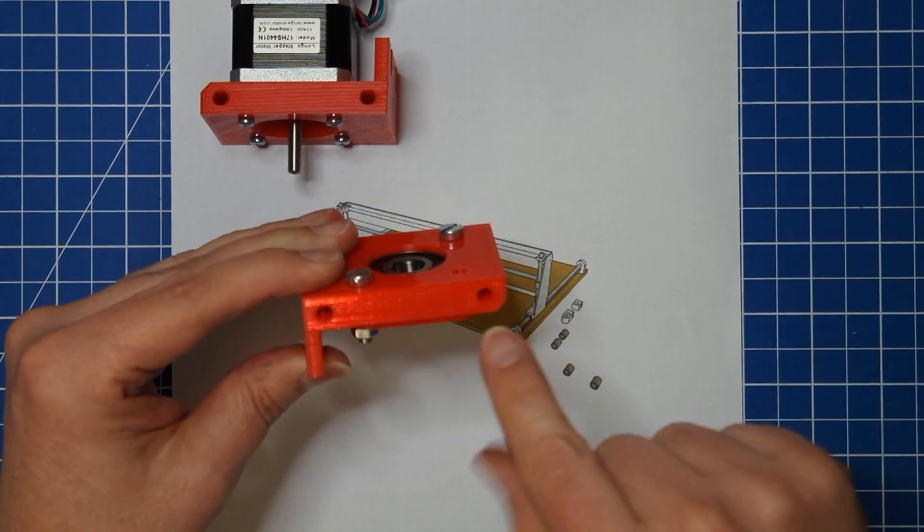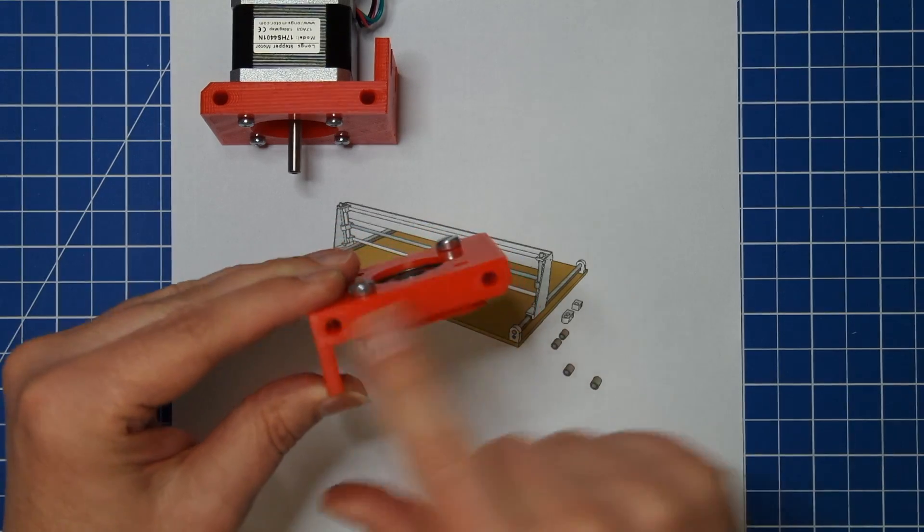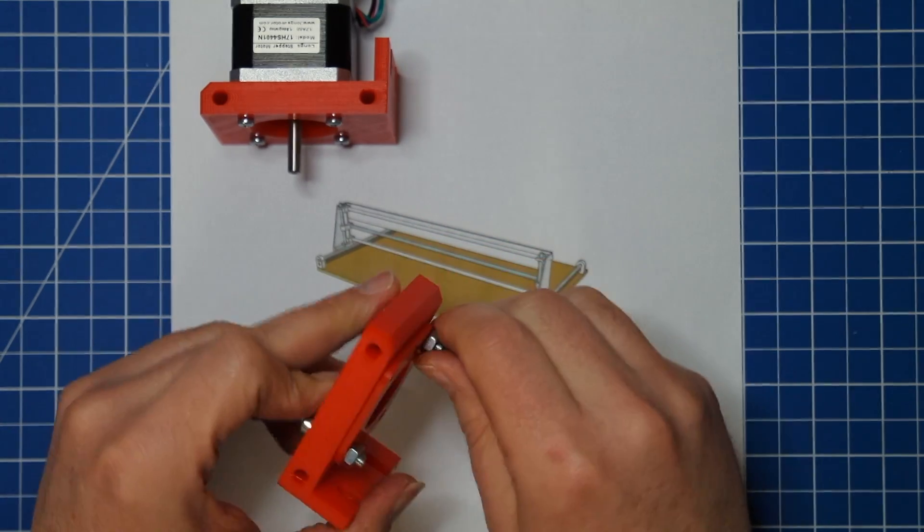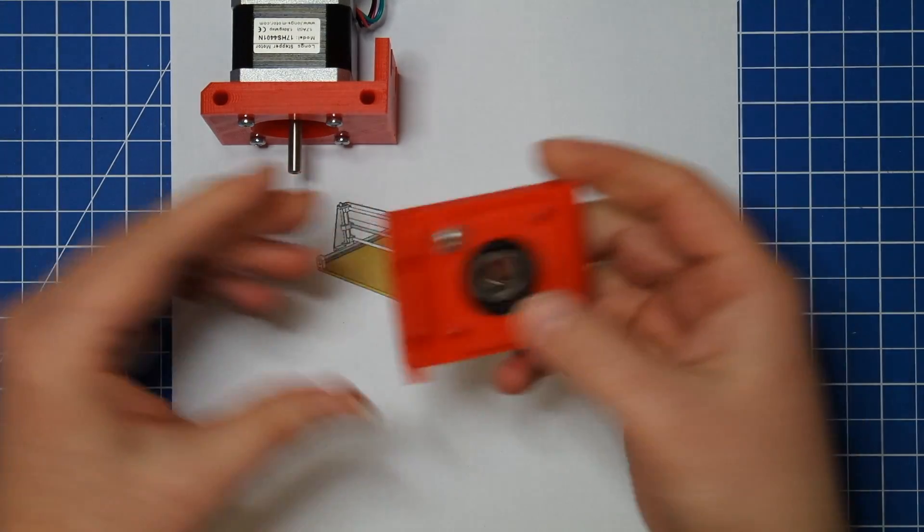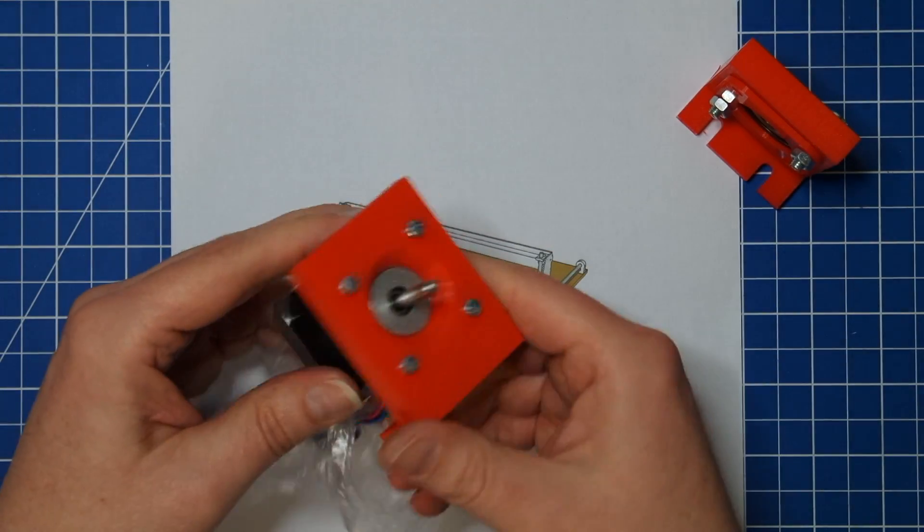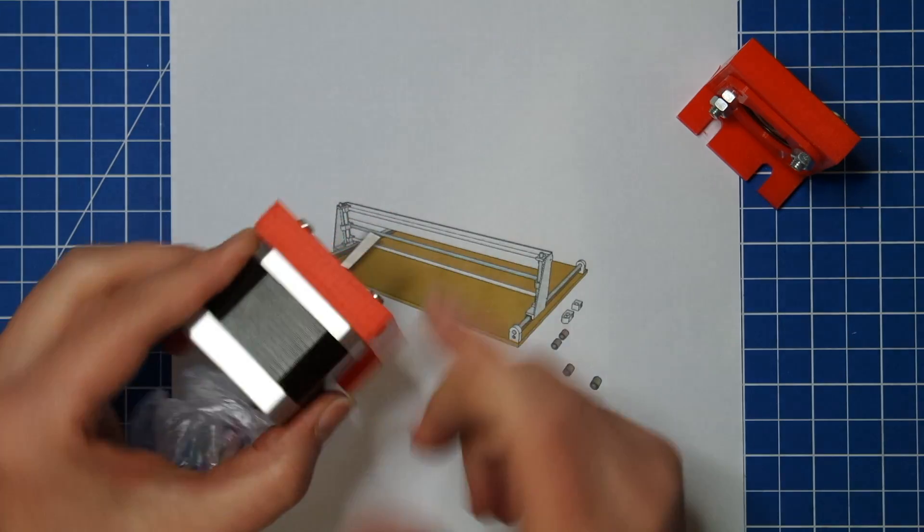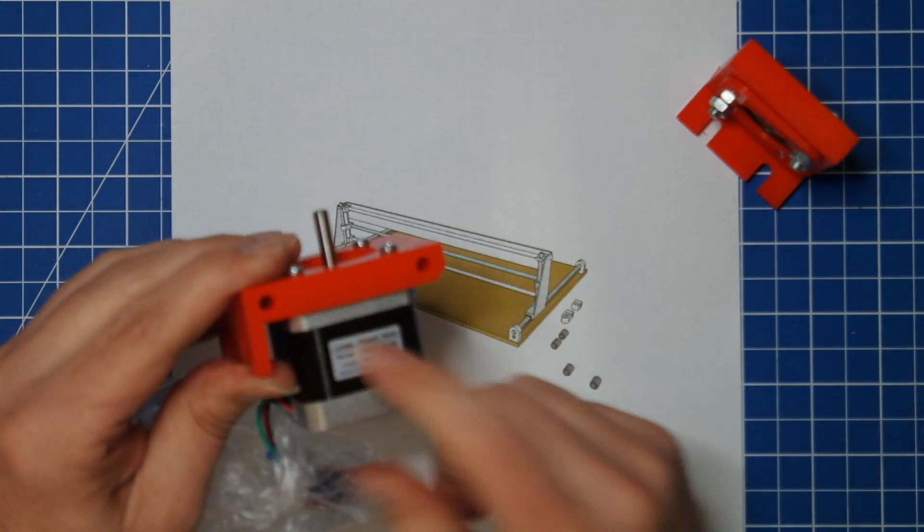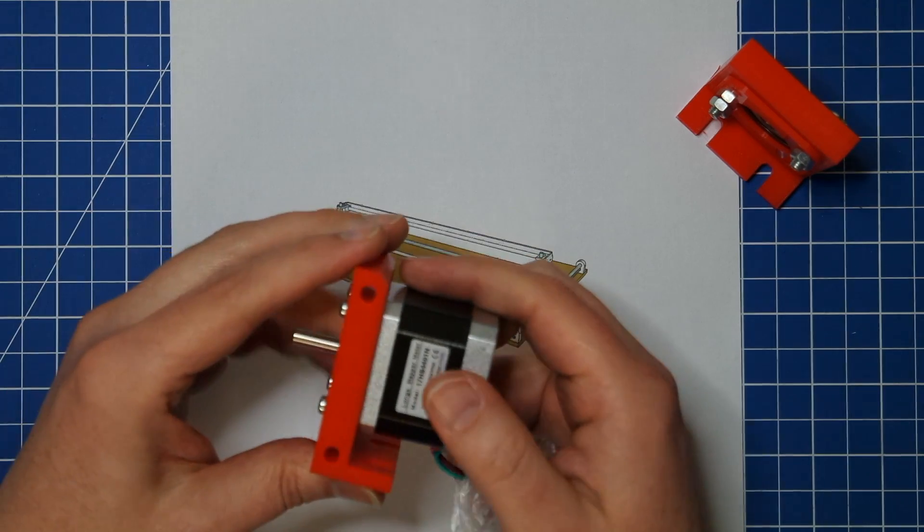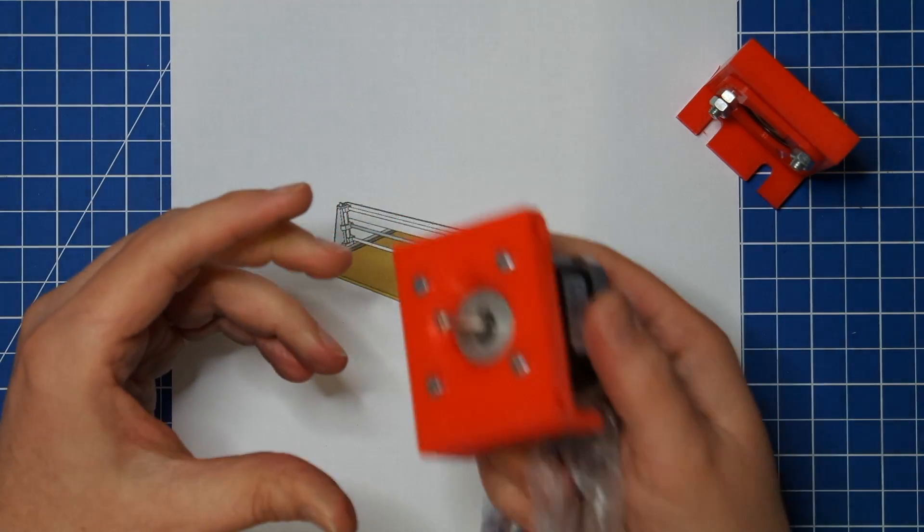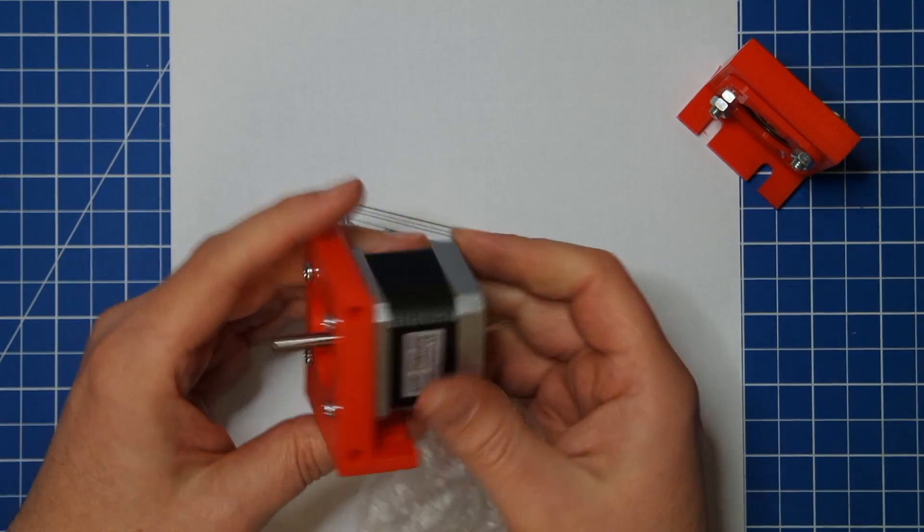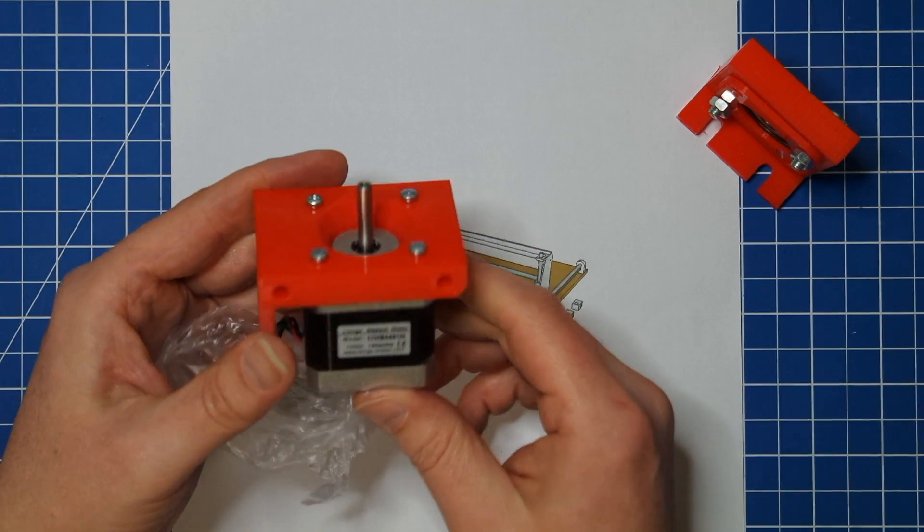In the end there will be threaded rods or very long screws going through here, holding everything in place so we can eliminate backlash. I also printed a holder for small steppers. These are the same steppers used in 3D printers. For the final machine these will probably be too small and too low power, but for testing they're just fine.